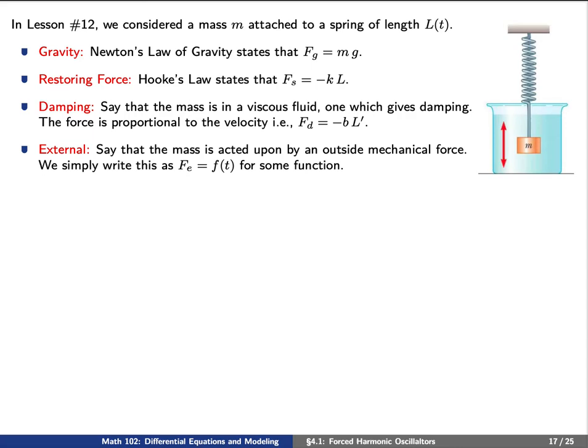Back in lesson 12, we considered a mass m attached to a spring of length l(t). We'll consider four forces at play on this mass m. First, we have gravity — Newton's law of gravity says the force the mass feels is mass times g, the gravitational acceleration, which is 9.81 meters per second squared. Second, we have a restoring force: if we stretch the spring to length l, there is a force proportional to the length, given by negative k times l for some positive constant k.